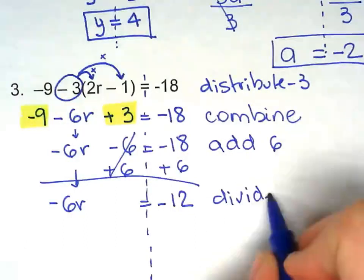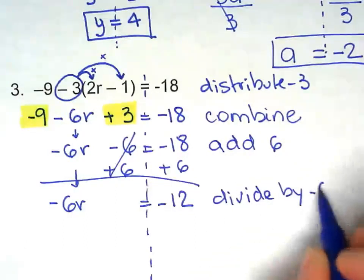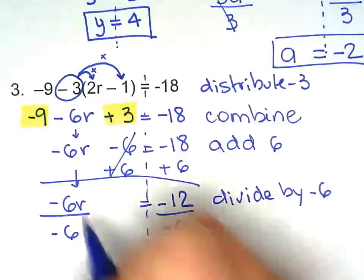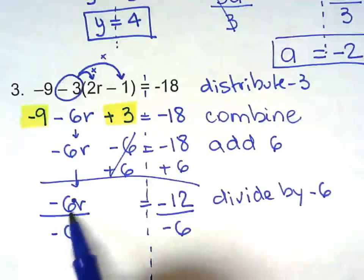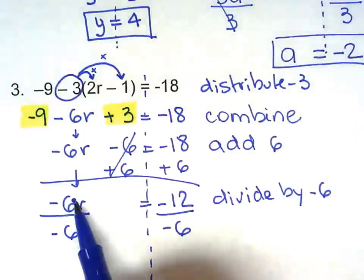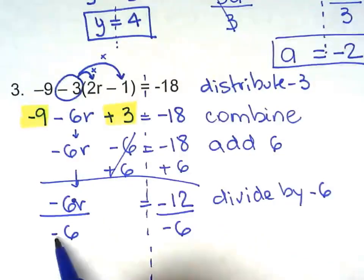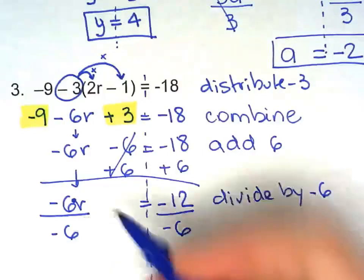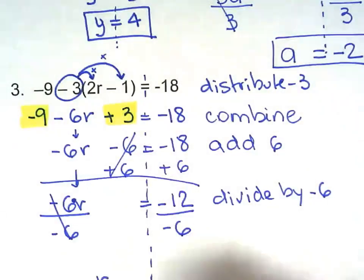Now we divide by negative 6. Don't forget, because we have that multiplication sign right there. And we're doing the opposite of multiplication, which is division. This sign right here, we don't change it. We're just doing the inverse of multiplication, which is division. Positive 2.